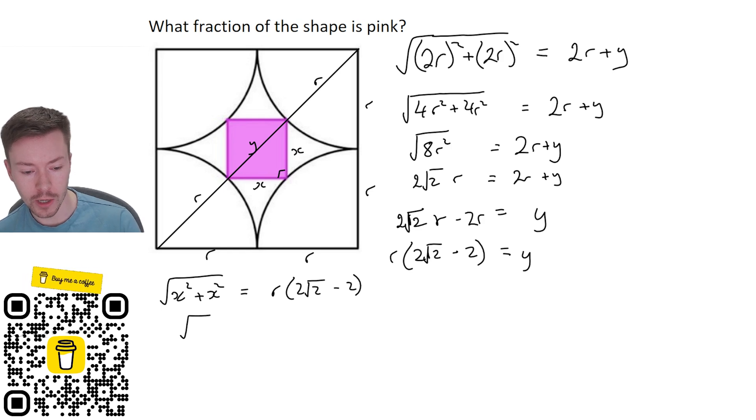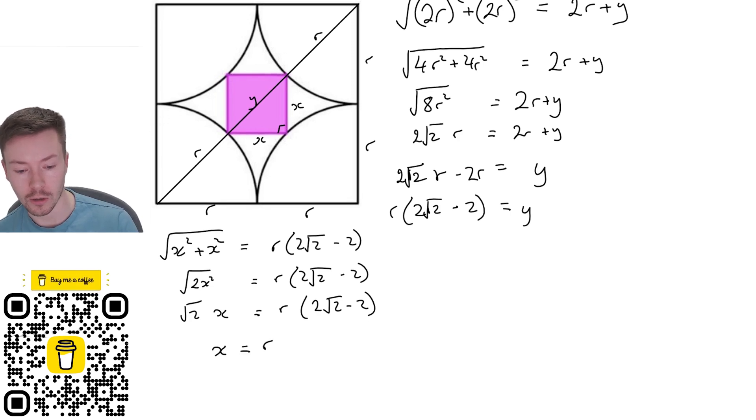So I've got the square root of 2x squared is equal to r 2 root 2 minus 2, this will give me root 2 times x is equal to r times 2 root 2 minus 2. Now what I want to do is divide both sides here by root 2. So dividing both sides by root 2 I'm going to get x is equal to r lots of 2 root 2 minus 2 over root 2. Now I can simplify that by writing x is r lots of, well 2 root 2 divided by root 2 is 2, 2 divided by root 2 is root 2, so I'm going to get 2 minus root 2. That's the length of my square.